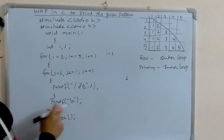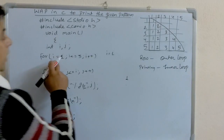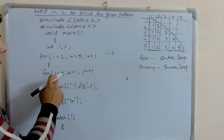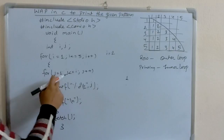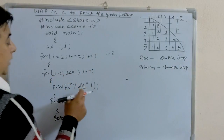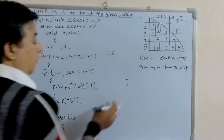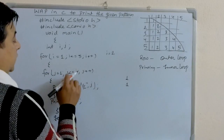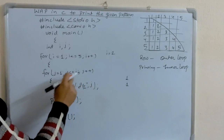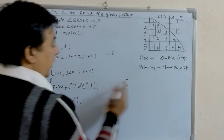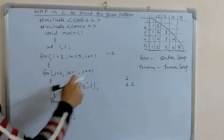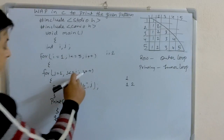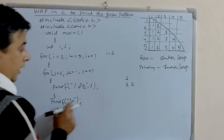It goes to the next line with printf "\n". Then the value of i increases and becomes 2. i less than or equal to 5 is true, and it enters the inner loop again. j = 1; j less than or equal to i — 1 is less than 2, so it is true. It prints j, which is 1. j increases to 2. j less than or equal to i — both i and j are 2, so it is equal and true. It prints j again, so it prints 1 and 2 in the same line. Then j becomes 3; 3 less than or equal to 2 is false, so it comes out of the inner loop and goes to the next line. The third row starts.